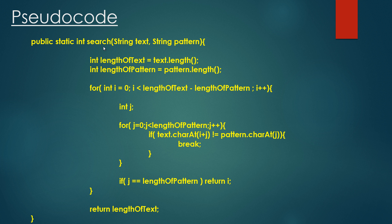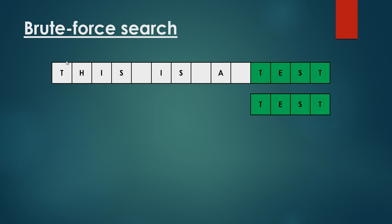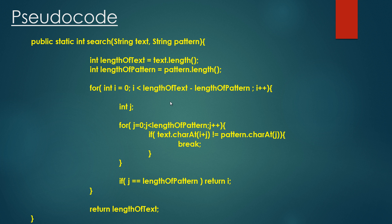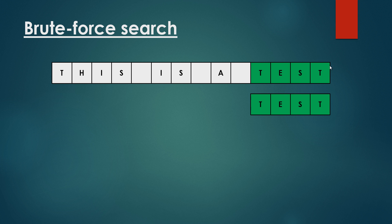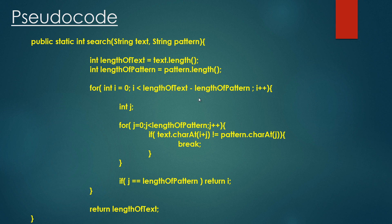The source code is quite intuitive. We have a text and a pattern. We get the length of the text and the length of the pattern. We iterate through until the index reaches length-of-text minus length-of-pattern, so we iterate through all single characters of the text. We don't have to consider the last few characters because if fewer characters remain than the pattern length, a match is impossible. That's why we stop at length-of-text minus length-of-pattern.